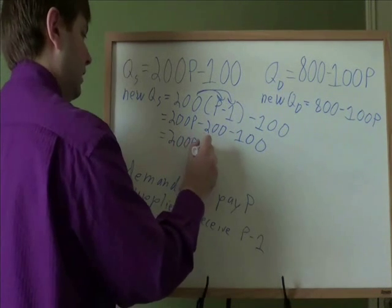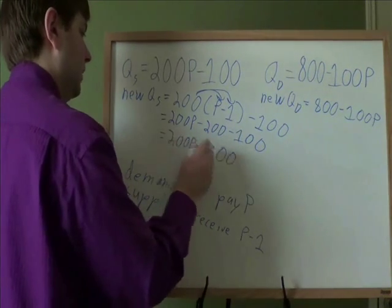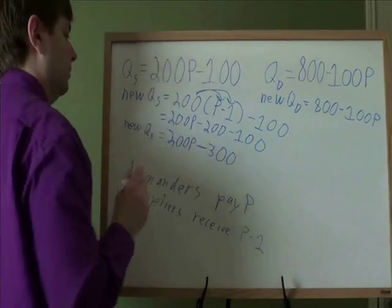Minus 200 and minus 100, they're both minus. They add up to give us a bigger negative. We've got 200P minus 300. That is the new quantity supplied. That's the new supply curve.